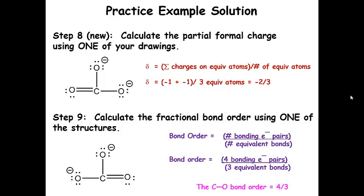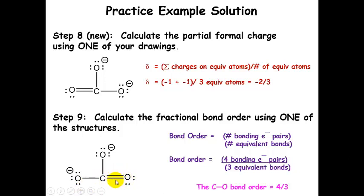What about bond order? We use one structure and count up all bonding electron pairs between carbon and oxygen: one, two, three, four — four bonding electron pairs, over one, two, three equivalent carbon-oxygen bonds. We know they're equivalent because they have the same bonding pattern and form equivalent resonance forms — three equivalent resonance forms, three equivalent bonds. Dividing four by three gives us four-thirds, or one-and-a-third bond order between each carbon and oxygen. So this bond order is 1.33 for each of the three C–O bonds.